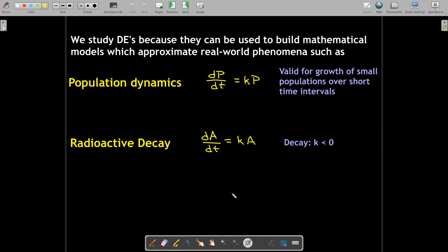Radioactive decay, this is a very good model, because decay, the constant of proportionality k, is going to be a negative number.